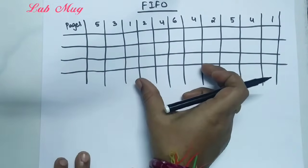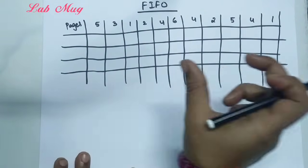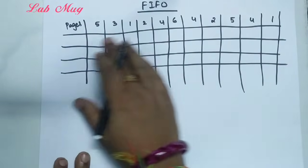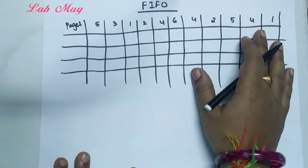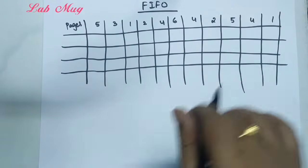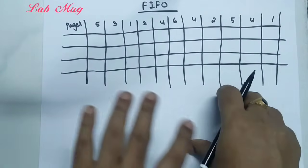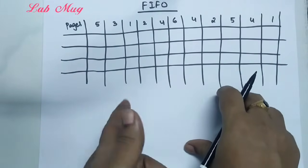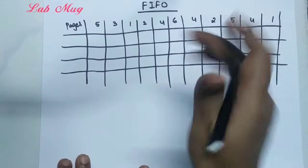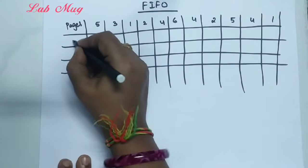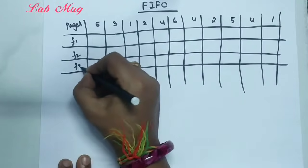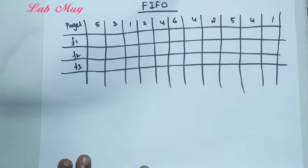So this is the FIFO example — First In First Out. The general question asked about First In First Out is: given pages, how do we find the First In First Out result? The process we are using has main memory with frames F1, F2, F3.